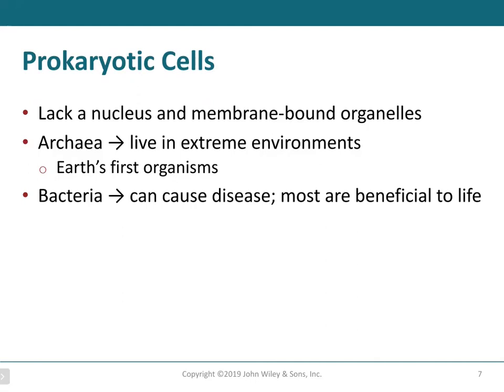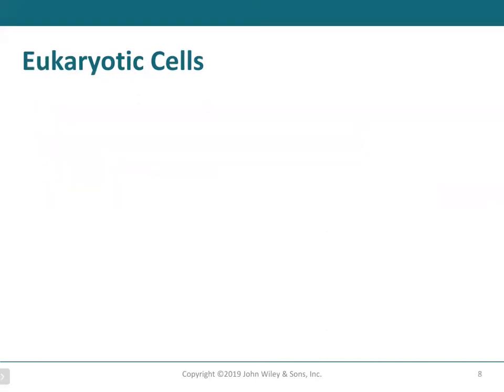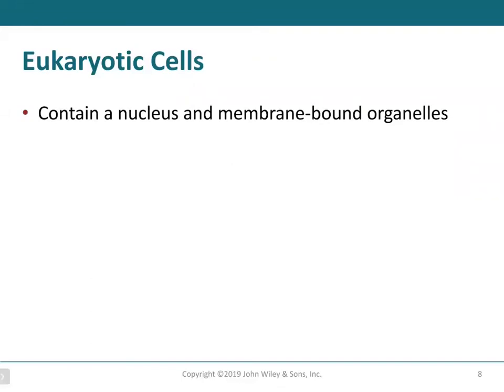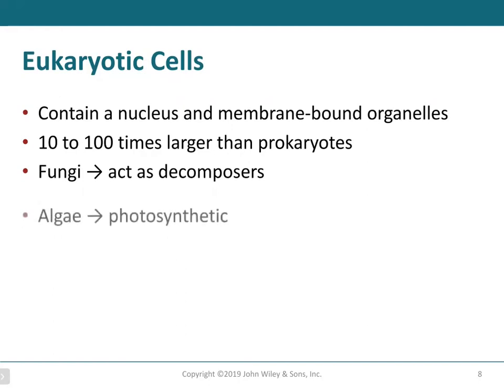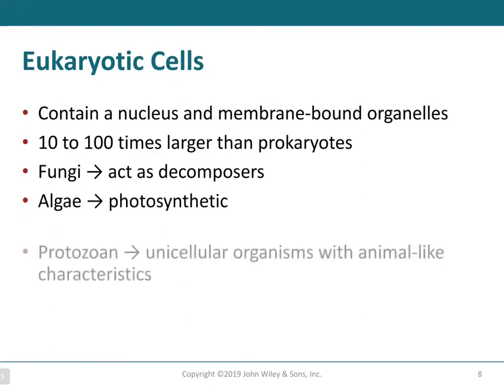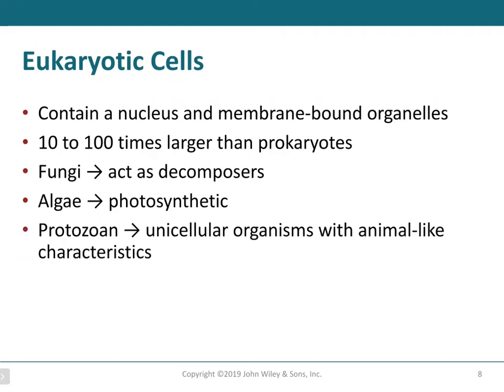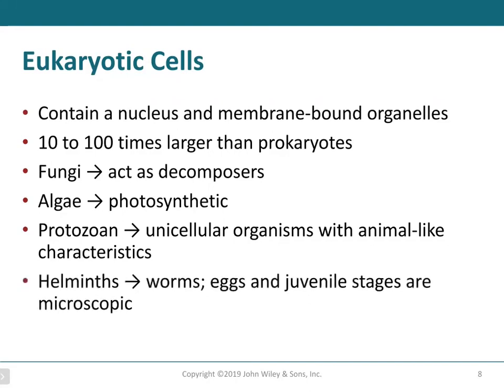In fact, our course is industrial microbiology, so we will be talking about bacteria and microorganisms that are beneficial to humans. For eukaryotic cells, they contain a nucleus and membrane-bound organelles and are 10 to 100 times larger than prokaryotes. Some examples are fungi, which usually act as decomposers; photosynthetic algae, which produce sugars from sunlight via photosynthesis; and protozoans, which are unicellular organisms with animal-like characteristics — proto meaning an earlier version, much like a prototype of an animal.